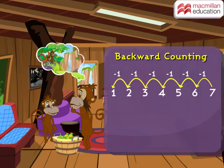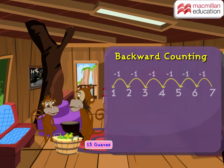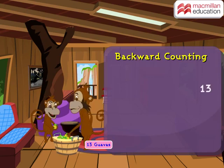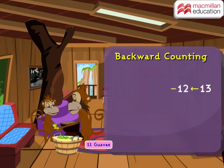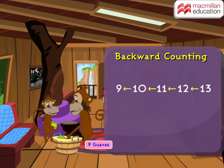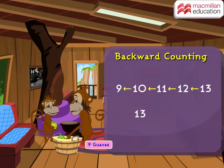Using this concept, we are going to help Kiki. Remember that Kiki had collected thirteen guavas in total. So in order to give away four, he must start backward counting from thirteen. Watch: thirteen, twelve, eleven, ten, nine — he did four counts backwards. So thirteen minus four equals nine.